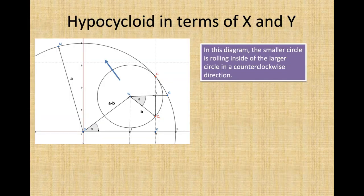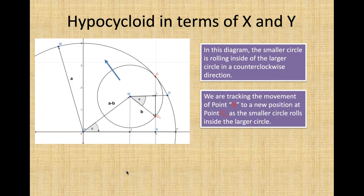In this diagram, we have the smaller circle rolling inside of the larger circle in a counterclockwise direction. We are tracking the movement of point G to a new position at point C1 as the smaller circle rolls inside of the larger circle.